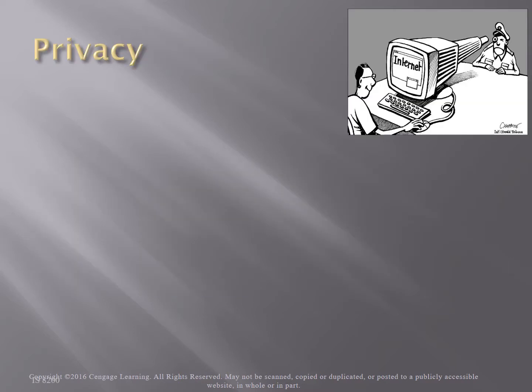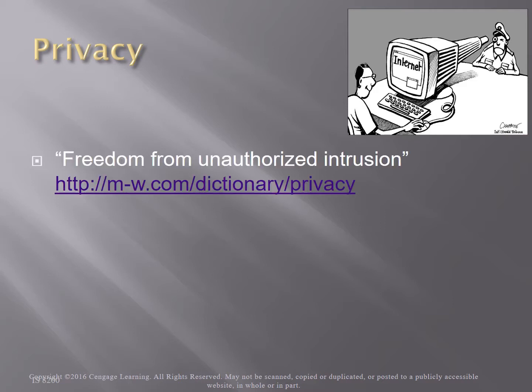Let's move now to Privacy. Many people think privacy is guaranteed in the Constitution, but the word privacy is never mentioned in the Constitution. Privacy is defined as freedom from unauthorized intrusion. So if I don't want people watching me, seeing what I do, getting my information, and I don't give them permission, then they aren't allowed to invade my privacy.